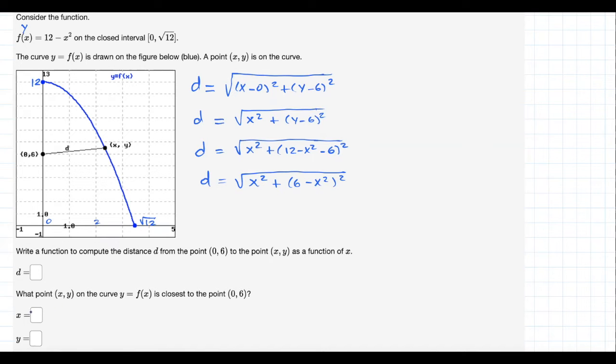d is written out as a function only in terms of x. Now, for the second part, they want you to figure out the values of x and y such that this distance is minimized. Let's talk about the closest point on the curve to this base point.